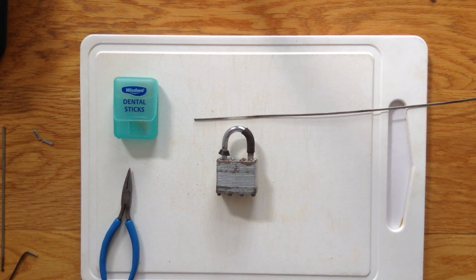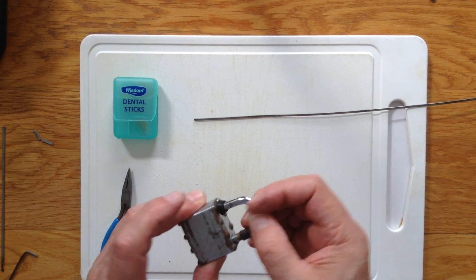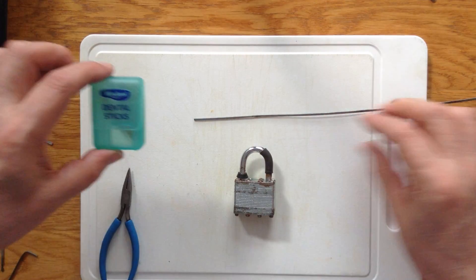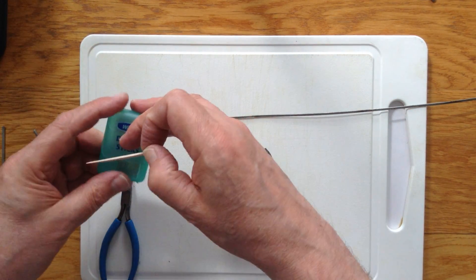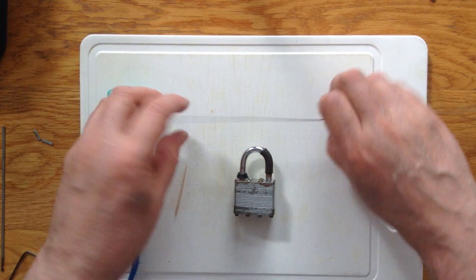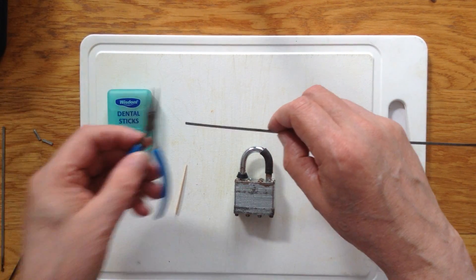Today I'm going to show you how to open an ordinary cheap padlock with nothing more than a wooden dental stick, a piece of car windscreen wiper insert, and a small pair of pliers.